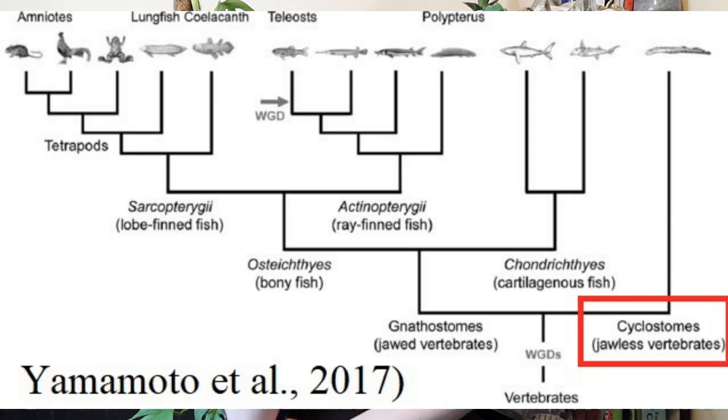So the most basal or primitive fishes are known as the jawless fishes. This includes Agnatha, which includes the hagfishes, and also lamprey.